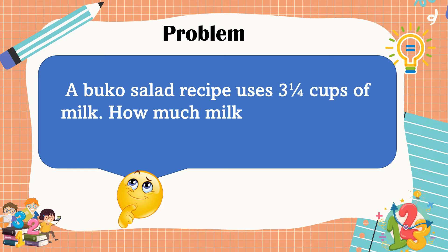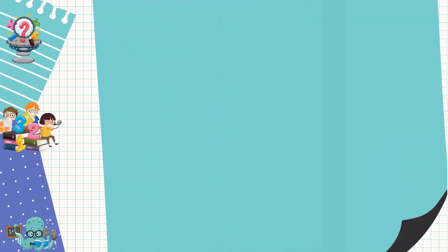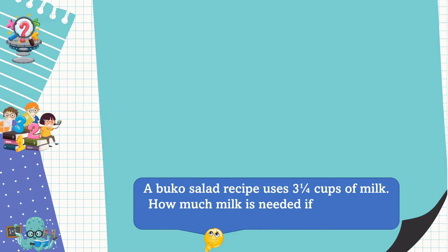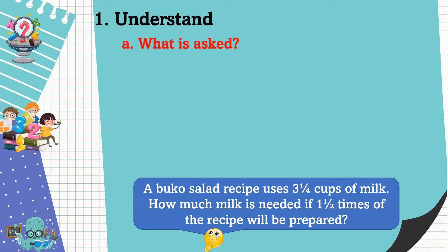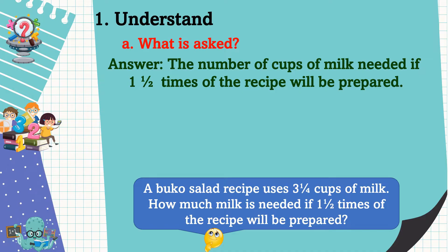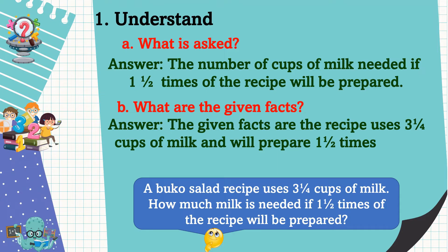How much milk is needed if one and one-half times of the recipe will be prepared? Our first problem is a routine problem, so we're going to use the four-step plan. First, we understand the problem. What is asked? This problem is asking for the number of cups of milk needed if one and one-half times of the recipe will be prepared. The given facts are: the recipe uses three and one-fourth cups of milk, and we will prepare one and one-half times of the recipe.